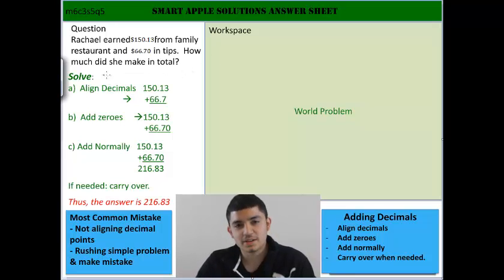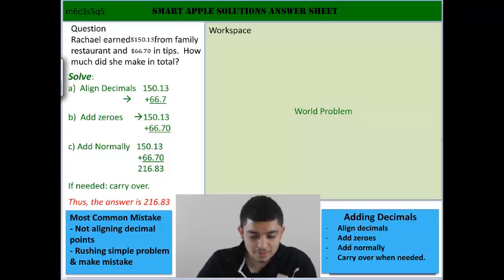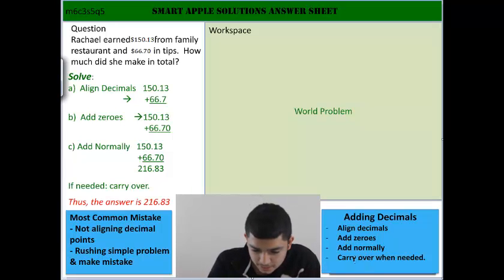So first off, when we're adding decimals, the first thing we need to do is align the decimals, then add zeros, so then we can add them normally. Then all we need to do is carry them over. So let's start off by writing them out.